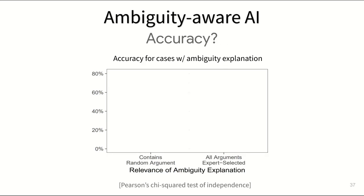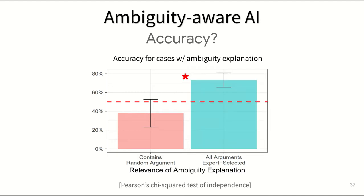Zooming in on just the ambiguity-aware AI, we tried to understand if those ambiguity explanations we displayed were taken into account at all by experts. We compared experts' accuracy for cases that had those random arguments sprinkled in to cases where arguments were displayed correctly as per the original expert discussion.